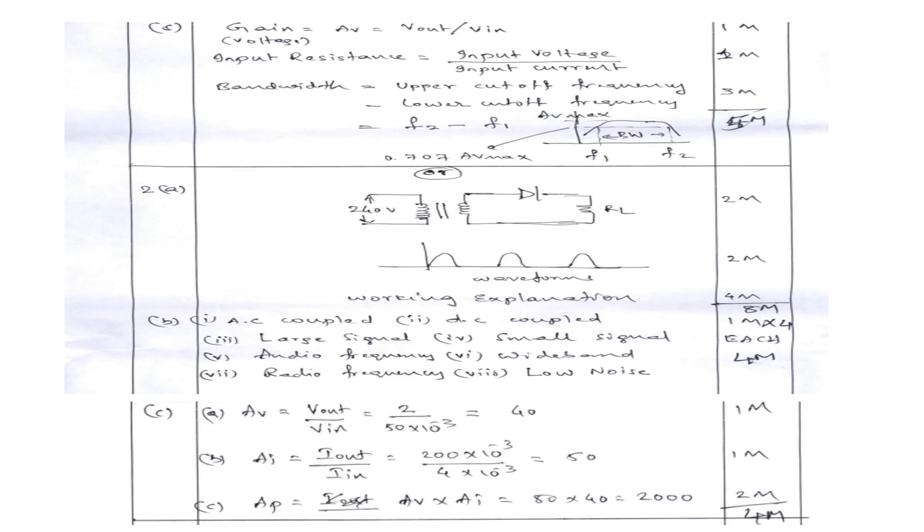For the OR choice on half wave rectifier: drawing the circuit carries two marks, the waveform carries two marks, and the explanation of how the circuit operates to produce the waveform carries four marks — totaling eight marks. For classifying types of amplifiers — AC coupled, DC coupled, audio frequency, wide bandwidth, radio frequency, low noise — listing and explaining each type in one or two lines is enough, totaling four marks.